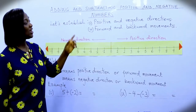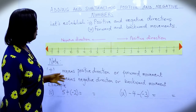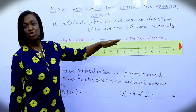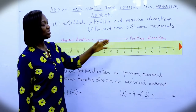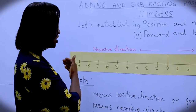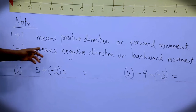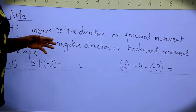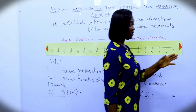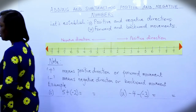Let's establish positive and negative directions and also forward and backward movements. In our number line, moving away from zero going towards the right is going in the positive direction. Moving away from zero but going towards the left will be moving in the negative direction. So the positive sign would mean positive direction or forward movement. You can face the positive direction and go forward, or face the negative direction and go forward.